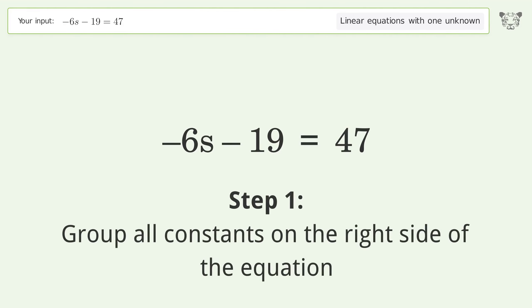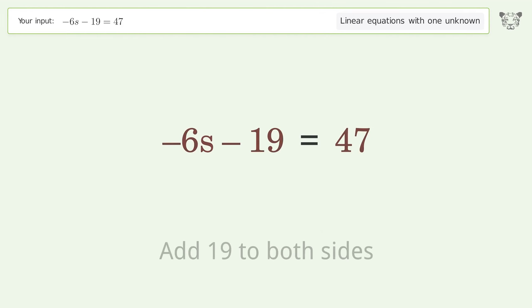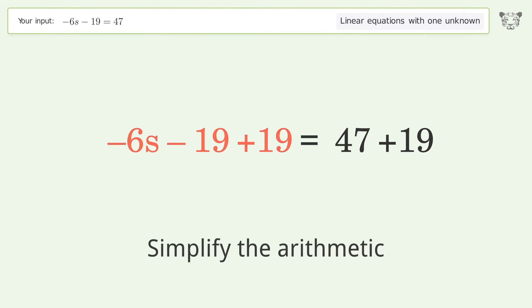Group all constants on the right side of the equation. Add 19 to both sides, then simplify the arithmetic.